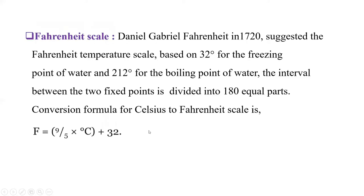Now next is Fahrenheit scale. Daniel Gabriel Fahrenheit in 1720 suggested this Fahrenheit temperature scale. It was based on 32 degrees for freezing point of water and 212 degrees for boiling point of water. And the interval between these two fixed points is divided into 180 equal parts.